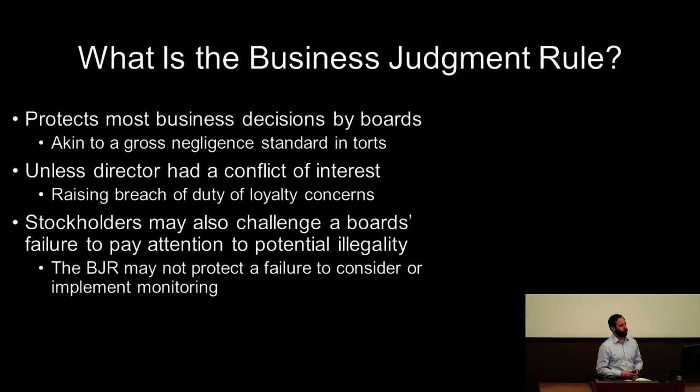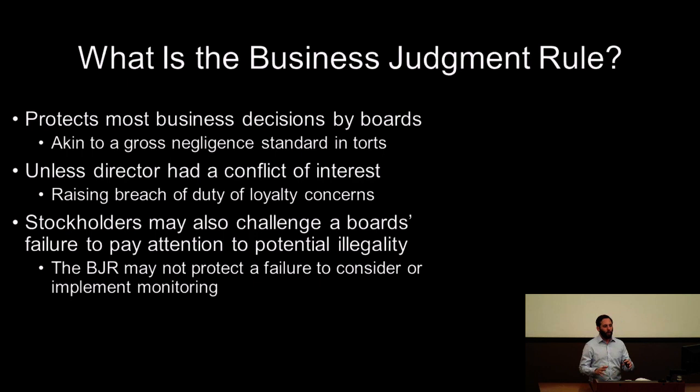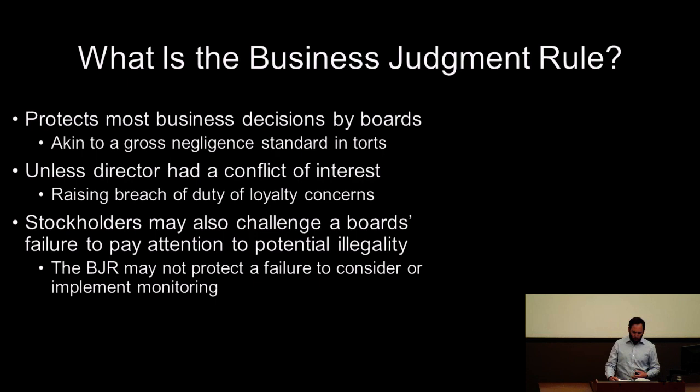The business judgment rule protects most decisions by boards, and as we saw, special litigation committees. It's been related to a gross negligence standard in torts, meaning that boards have to do something more than mere negligence to be found liable. However, if a director has a conflict of interest, stands on both sides of a transaction, or usurps a business opportunity, they lose that business judgment deference. As a result, duty of loyalty breaches are the areas where shareholders will be able to sue — there is less shielding of director activity.